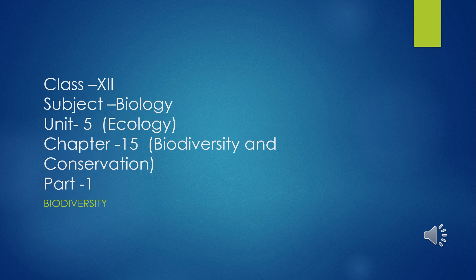So what does biodiversity mean? Bios means life and diversity means forms. This term was given by Rosen in 1985 and its meaning is: biological diversity is the occurrence of different types of ecosystems, different species of organisms with the whole range of their variants, biotypes and genes adapted to different climates and environments along with their interactions and processes.